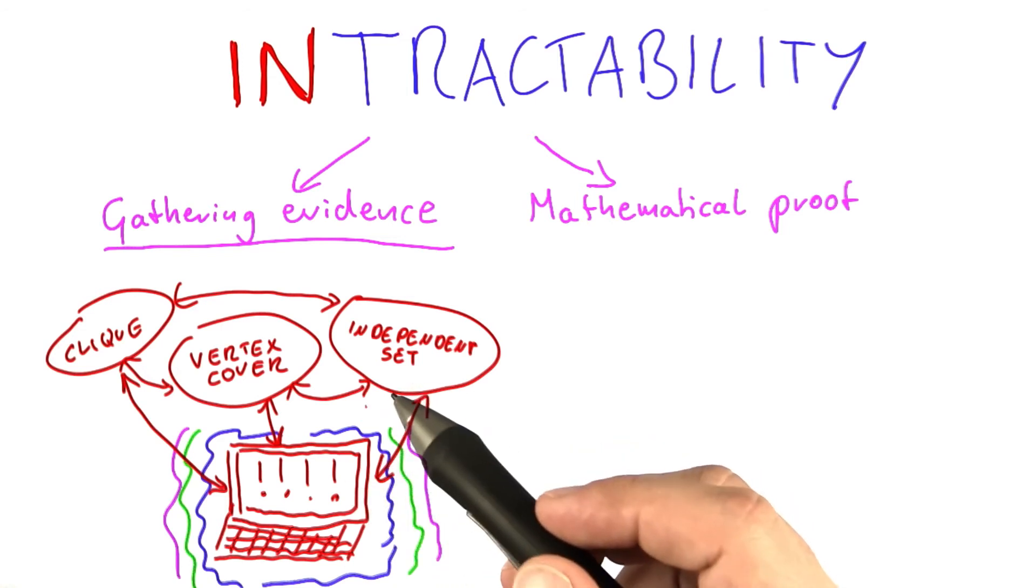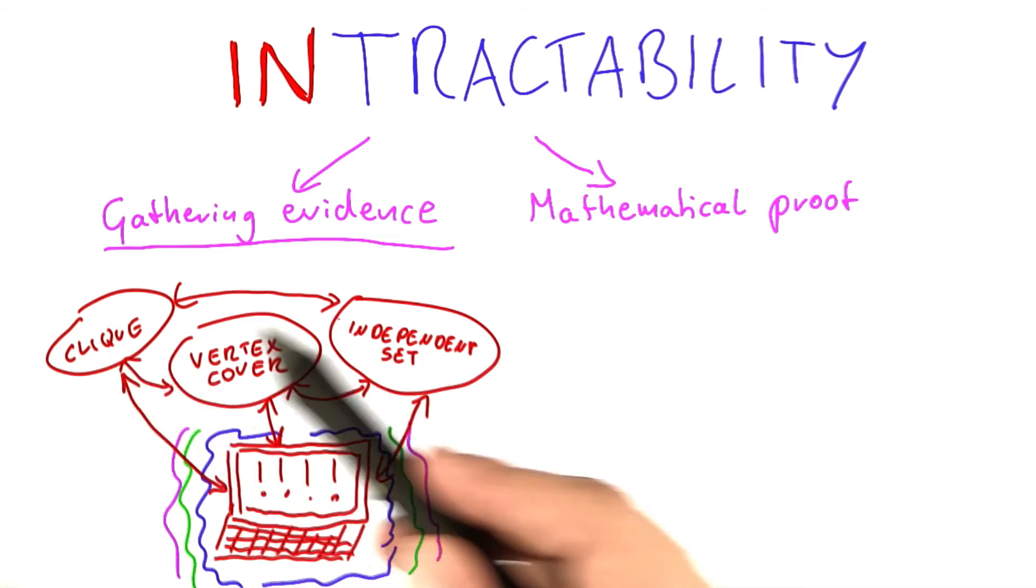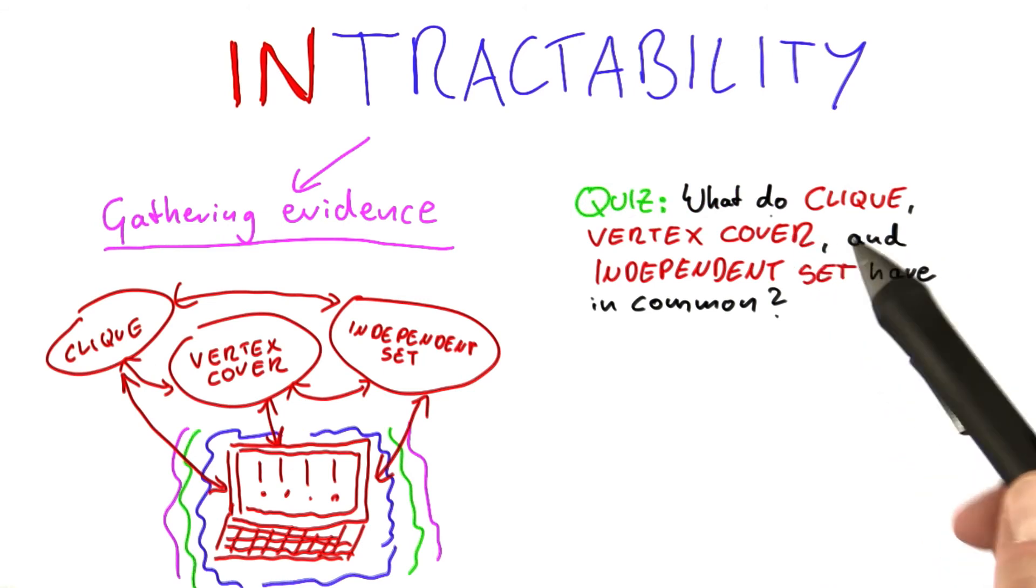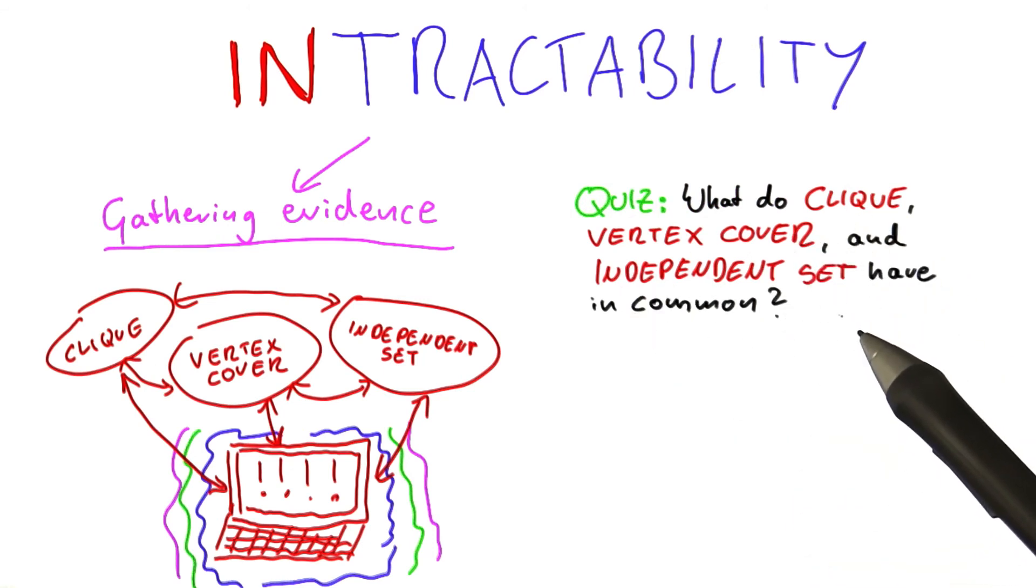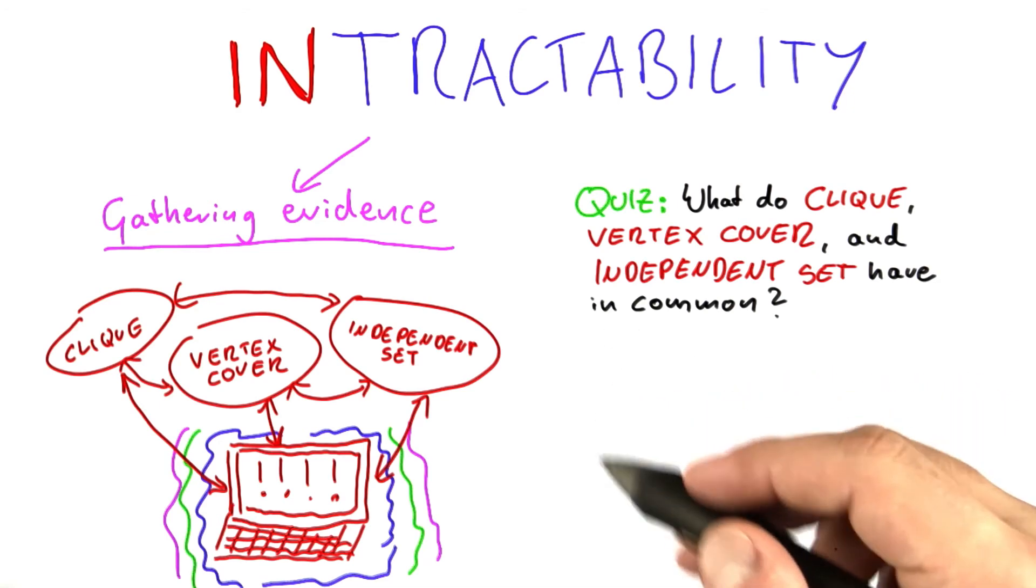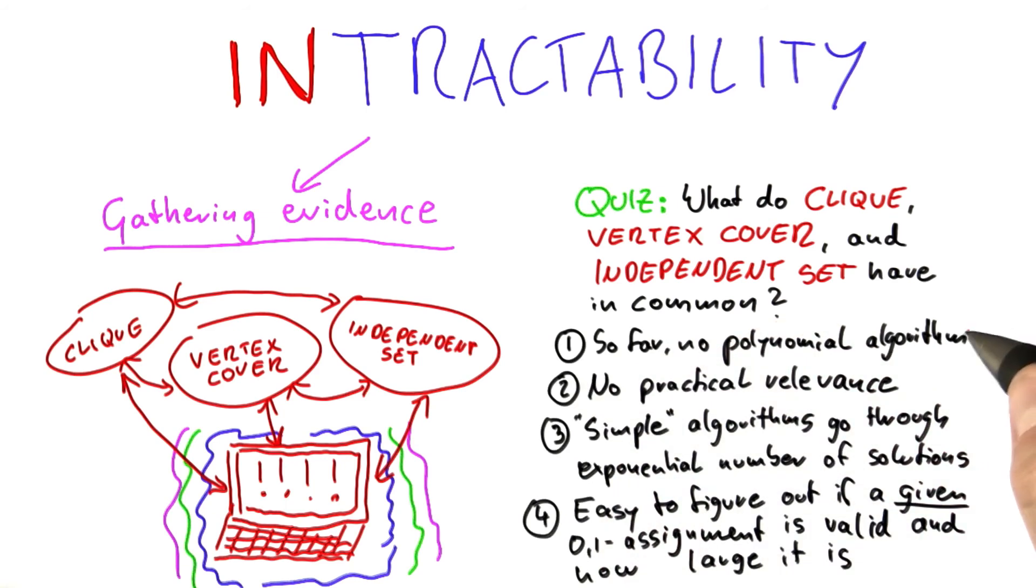First of all, let's have a look once more at the three problems: clique, vertex cover, and independent set, and have a look at how a machine that would be capable of guessing things for us could potentially make the solution to these problems very easy. We're going to do this as a quiz. What I would like you to think about is what the three problems we have been talking about so far have in common. I'm going to give you a number of choices, and I would like you to tell me which ones of these you think are true. There can be more than one.